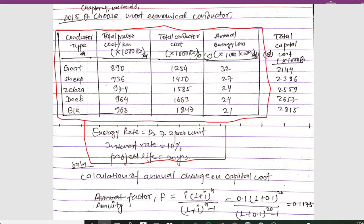The conductor types given are: Goat, Sheep, Zebra, Deer, and Alga. Similarly, the total power cost per kilometer is given in the table. We have also been given the total conductor cost, and in the next column we have the respective values for annual energy loss for each conductor.